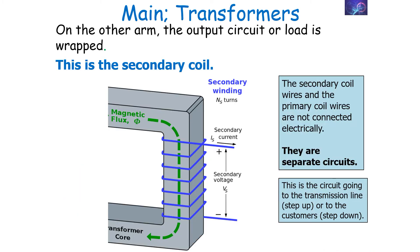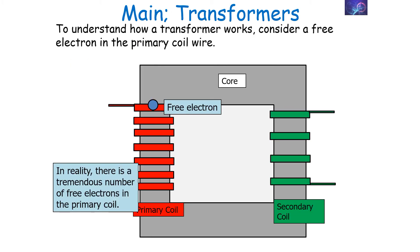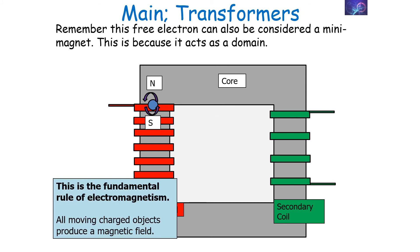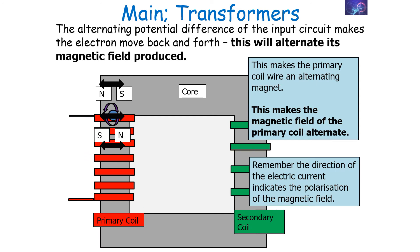The two separate electrical circuits do not link to each other. To understand how a transformer works, we consider a free electron in the primary coil wire. When electrons are moving in a current, they also become a magnet — that is a fundamental rule of electromagnetism. All moving charged objects produce a magnetic field. With an alternating potential difference and therefore alternating current in the primary coil, the magnetic field produced by the electrons alternates backwards and forwards. So the primary coil makes an alternating magnetic field.